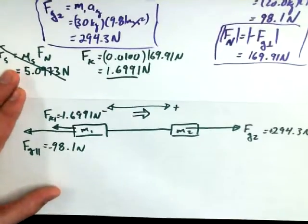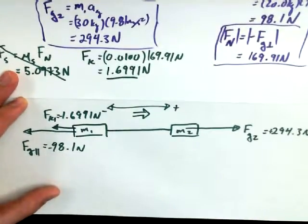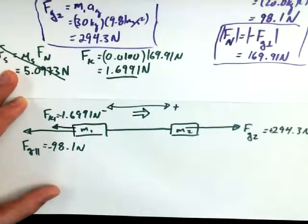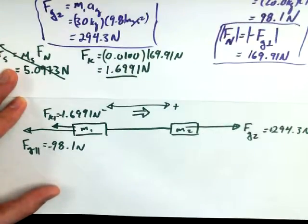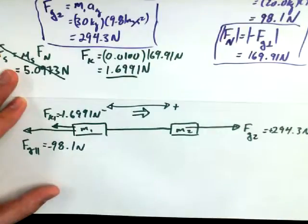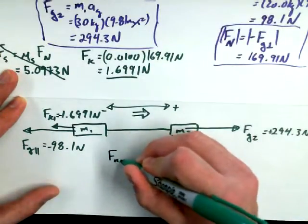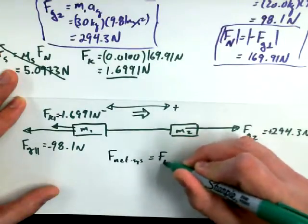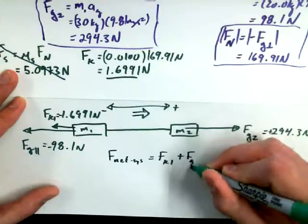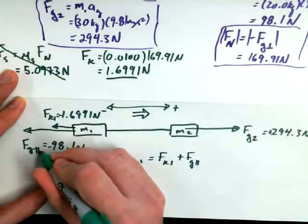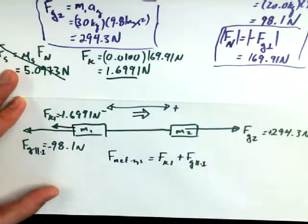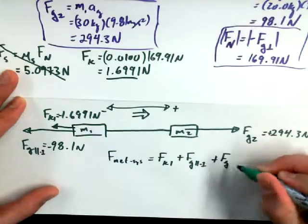Are there any other forces that should be acting on this system? I know that we labeled up force of 1 on 2 and force of 2 on 1 in the initial diagram, but is that going to change the net force for the system? I don't think so. Those are internal forces. Now, if somebody asks us what the tension on the rope is, that's a different problem. But we're solving a different problem right now. There's no other external forces that are going to be impacting this system. Plus FG2.